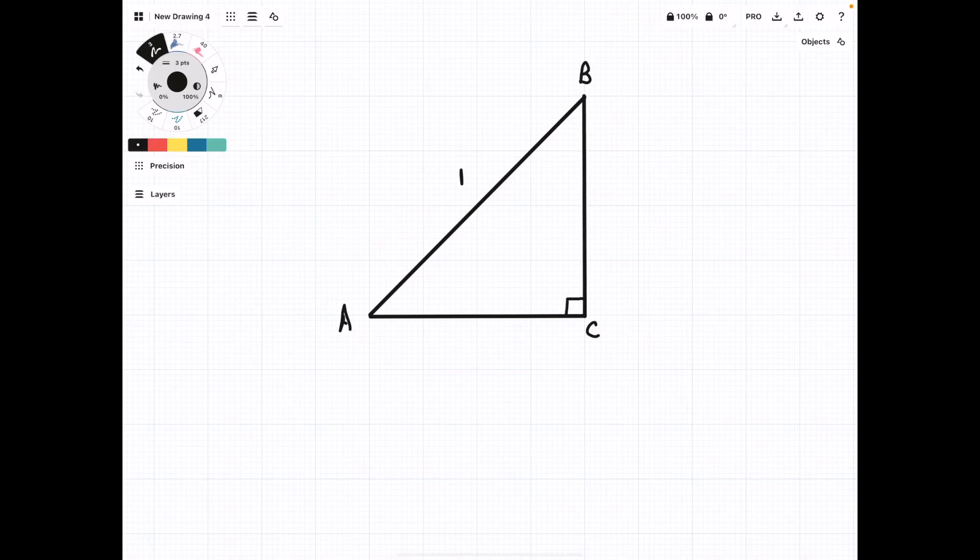We're going to derive the sum formula for sine. So to start off, we have our right triangle ABC with a hypotenuse of 1.